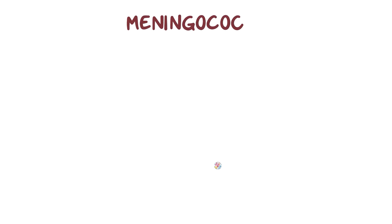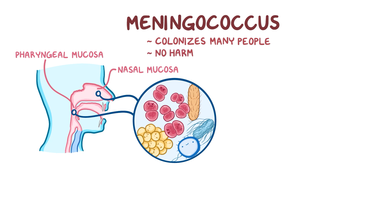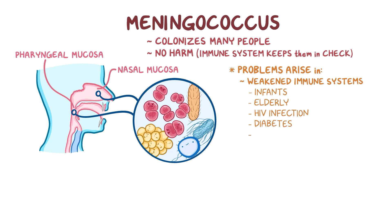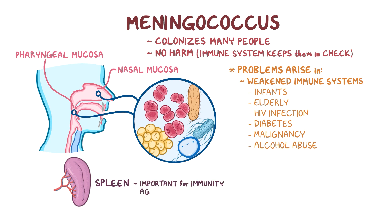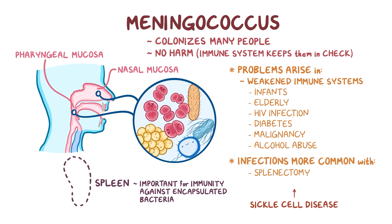The good news is that meningococcus can actually colonize the nasal and pharyngeal mucosa of many people, where it doesn't do any harm so long as the immune system keeps them in check, restricting their growth and preventing them from getting into the bloodstream. Problems arise in individuals with weaker immune systems, like infants and the elderly. Other immune-weakening conditions include HIV infection, diabetes, malignancy, or alcohol abuse. Additionally, since the spleen plays an important role in immunity against encapsulated bacteria, meningitidis infections are more common in people who have had a splenectomy, or in those with sickle cell disease who have functional asplenia.